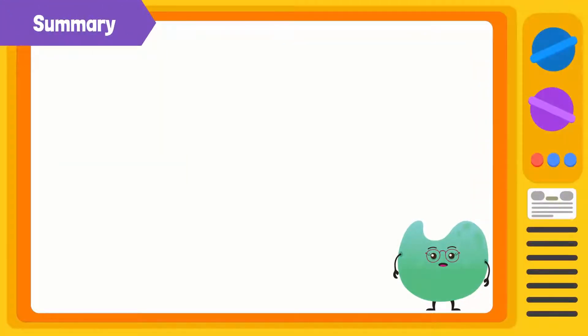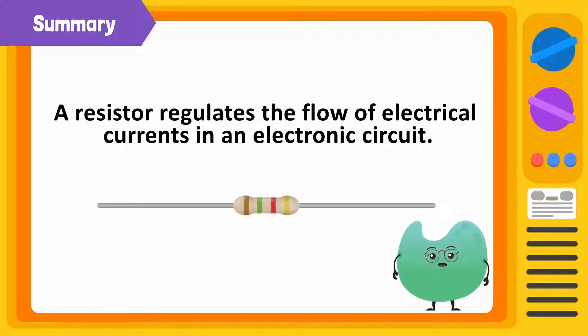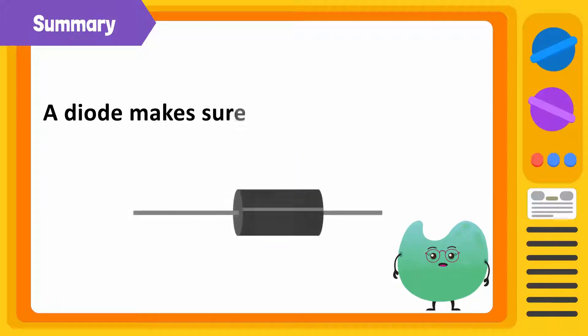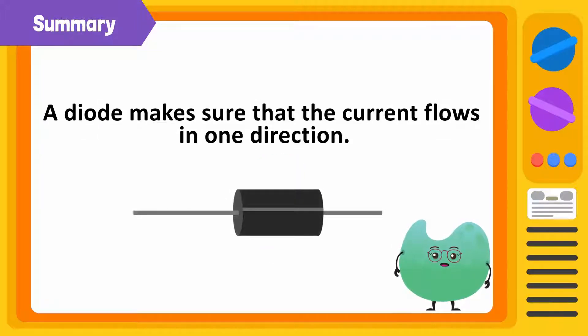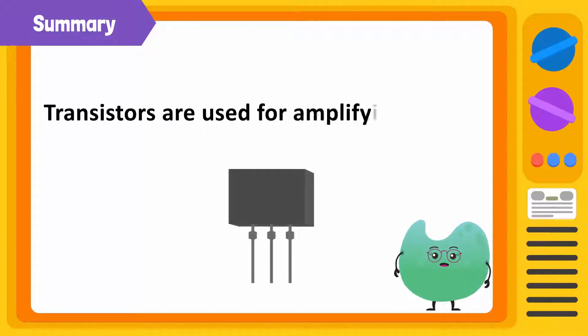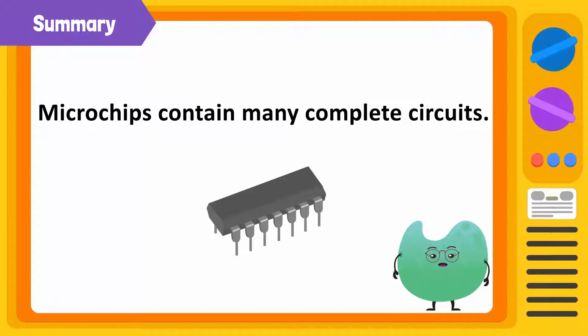Today, we have learned about some basic electronic components. A resistor regulates the flow of electrical currents in an electronic circuit. A capacitor stores electric charges. A diode makes sure that the current flows in one direction. LEDs are a type of diode that glow when current passes through them. Transistors are used for amplifying signals and for switches. And microchips contain many complete circuits.